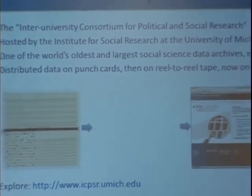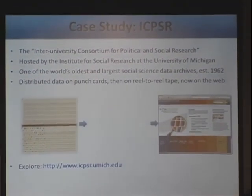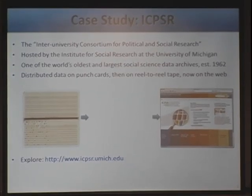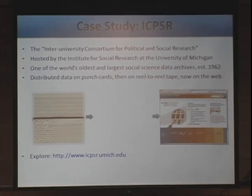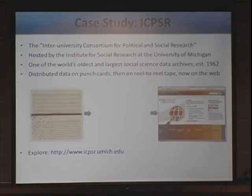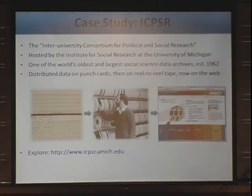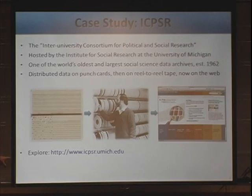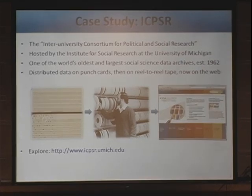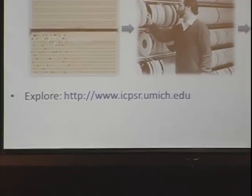I work at a place called ICPSR — the Inter-University Consortium for Political and Social Research. It is housed at the Institute for Social Research at the University of Michigan in Ann Arbor, and it's one of the world's oldest and largest social science data archives. Founded in 1962 — in Internet time, that's like back to the pyramids. Originally, data was distributed on punched cards, then on nine-track tapes, and now it's all on the web at ICPSR.umich.edu.